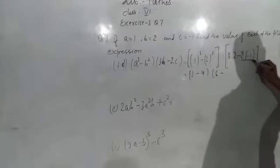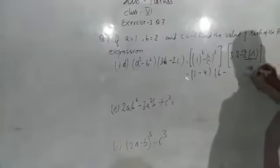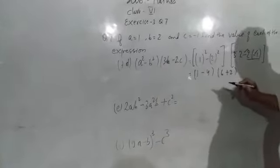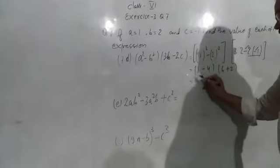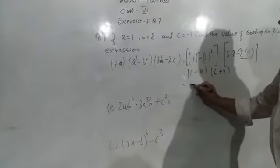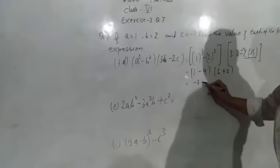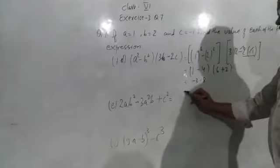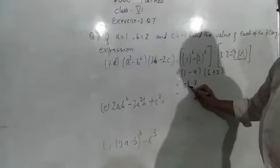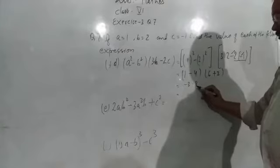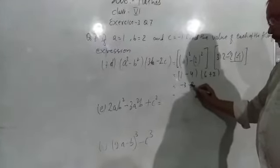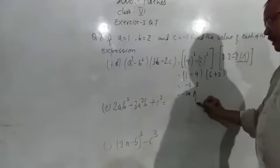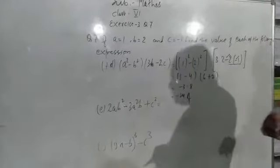Small bracket close, into 3 into 2 is 6, minus — now here multiply it: minus into minus is plus. And 2 ones are 2. So the difference: 1 minus 4 is minus 3, into 6 plus 2 is 8. One of the values is given here as minus 3, so minus 3 into 8 is minus 24, which is our required answer.